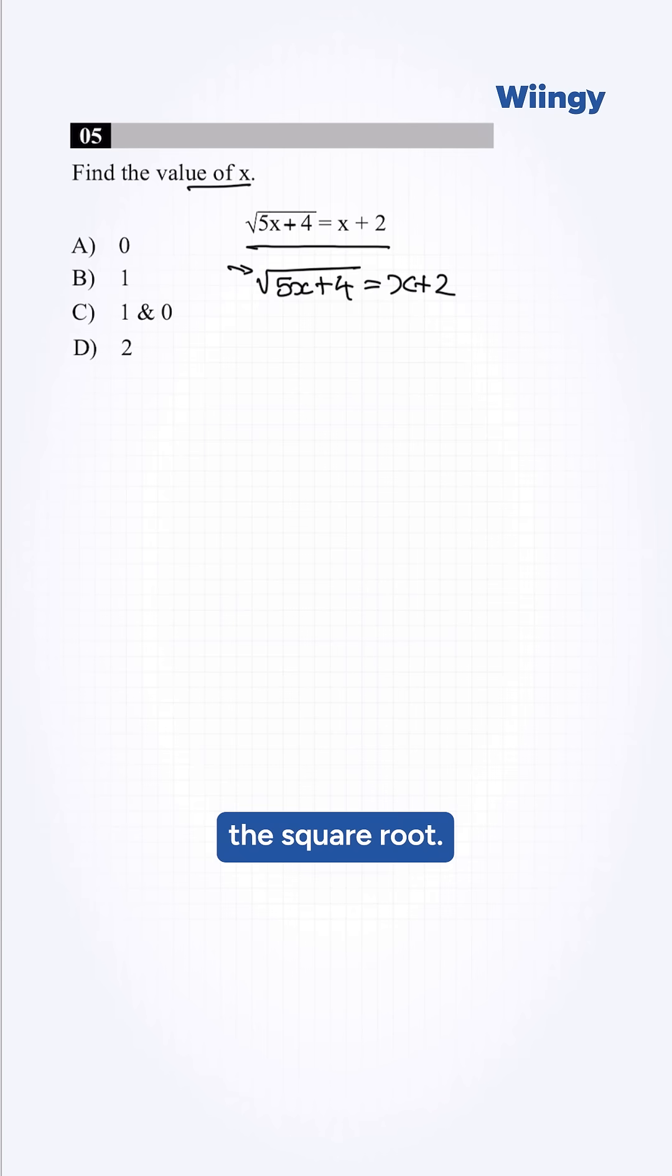First, we need to eliminate the square root, so we square on both sides. This will become 5x plus 4 equal to x plus 2 whole square.